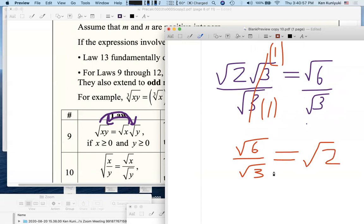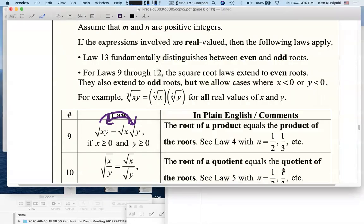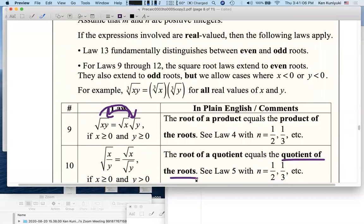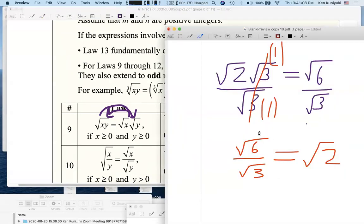root 6 divided by root 3 is root 2. When you divide roots, you divide the radicands. The quotient of the roots equals the root of the quotient.